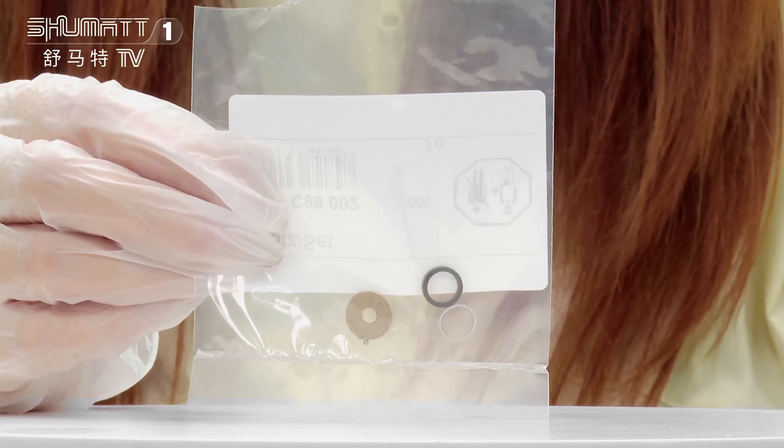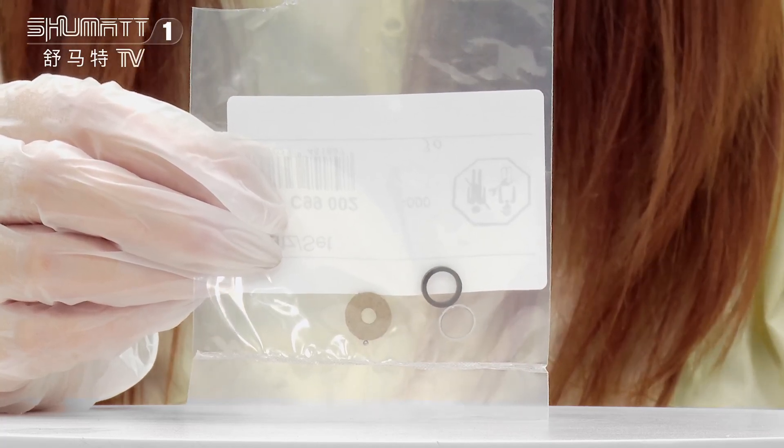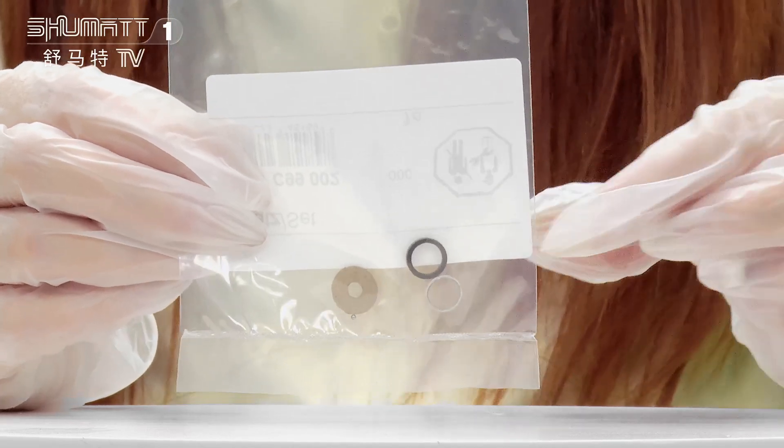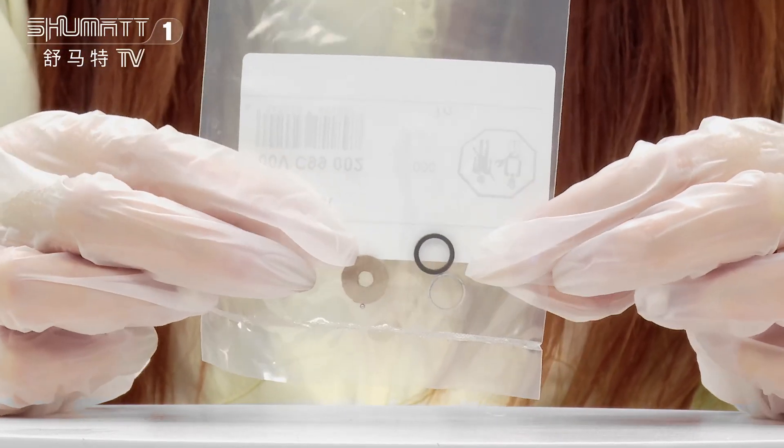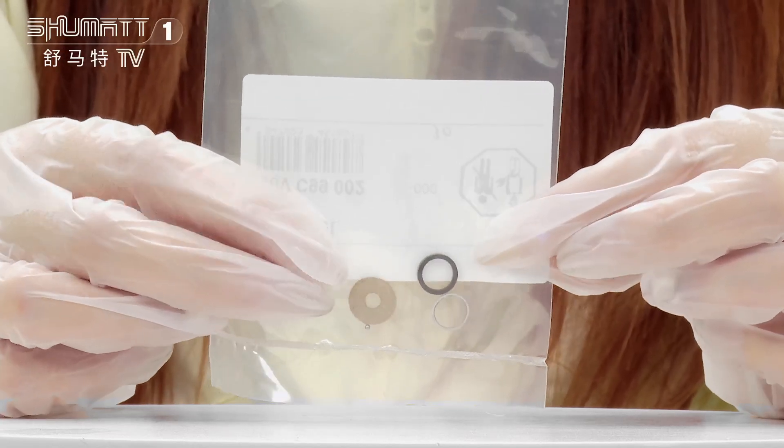The kit contains sealing ring and support ring, together with the white ball, support ring, and O-ring.